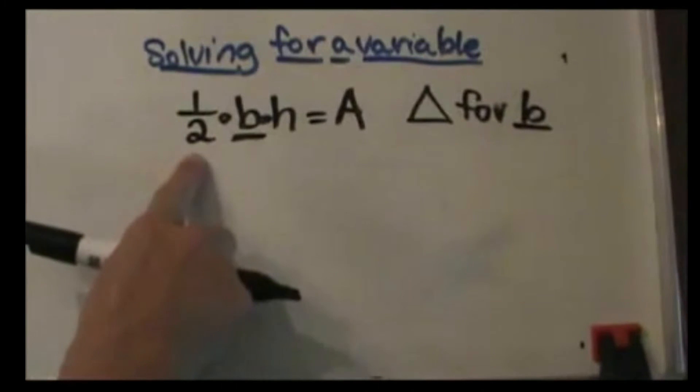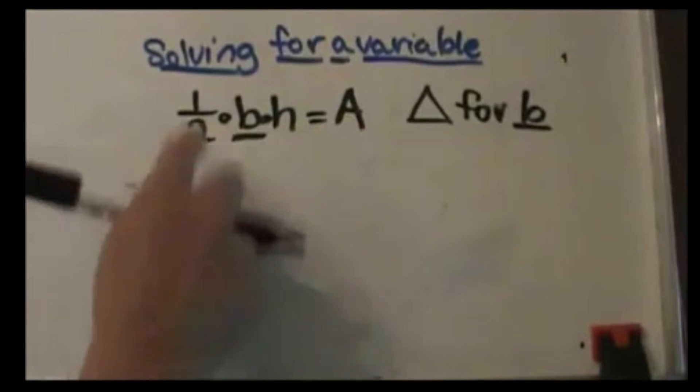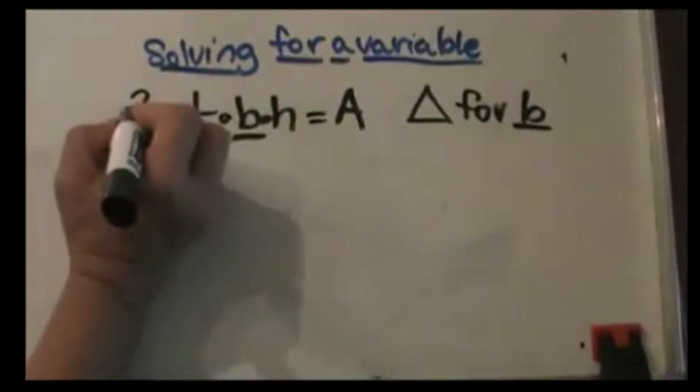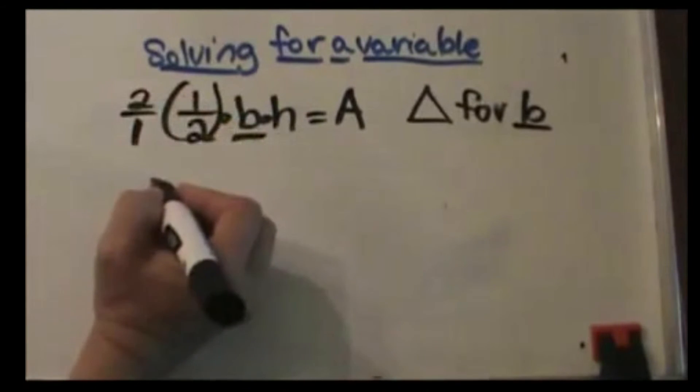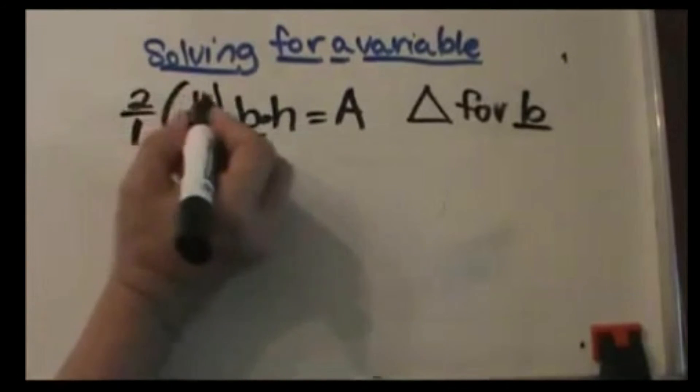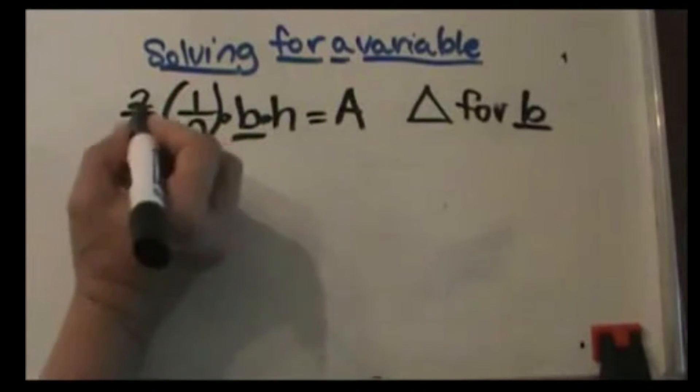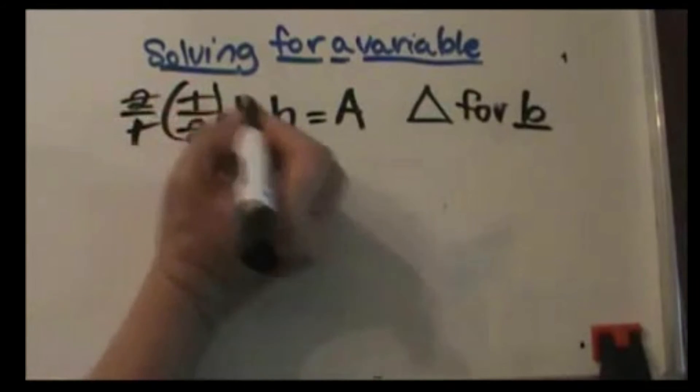Now if you're comfortable with multiplying by reciprocals, that is the easiest way to get rid of a coefficient fraction. So I'm actually going to multiply both sides by two over one. I'm just going to multiply by the reciprocal of one half, which is two, and then I end up with two over two, which these all just cancel out.